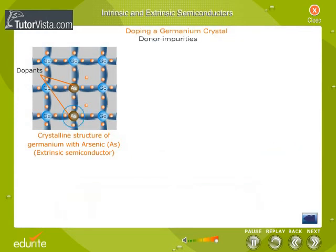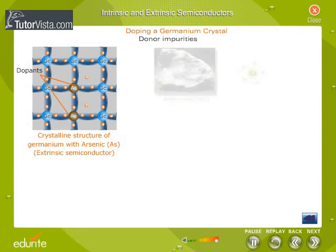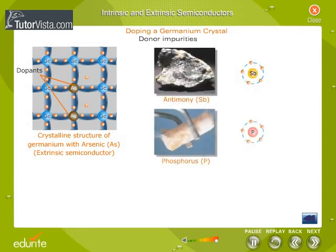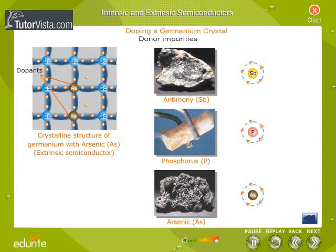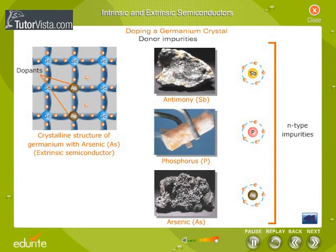Donor impurities are those elements which donate excessive electrons for conduction. Pentavalent elements like antimony, phosphorus, and arsenic are donor impurities. Donor impurities are also known as n-type impurities.